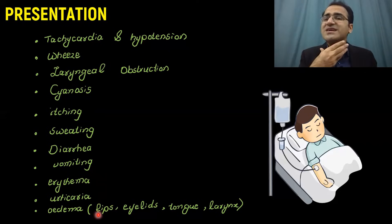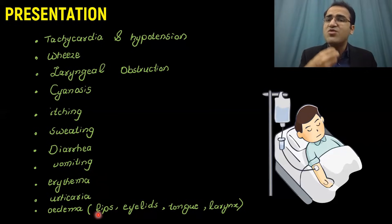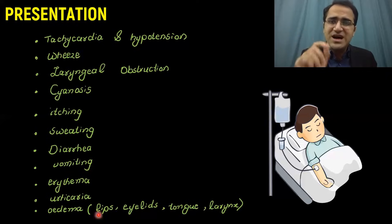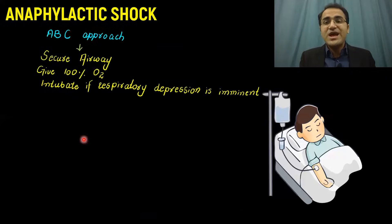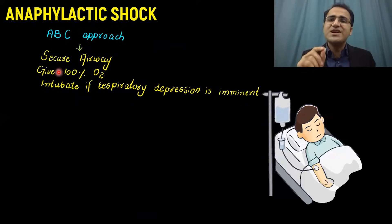The most important thing is the protection of the airway. Since these patients develop laryngeal obstruction, wheeze, and bronchoconstriction, that can cause a life-threatening attack, so protecting the airway is the highest priority. When treating anaphylactic shock, always approach the patient with the ABC approach — always protect and secure the airway.